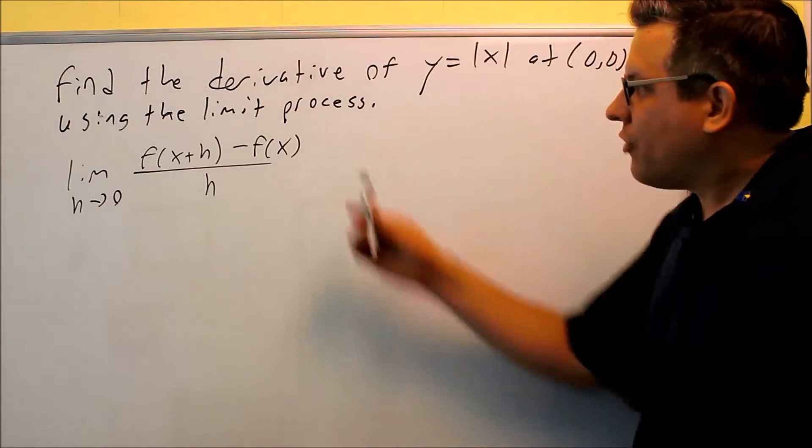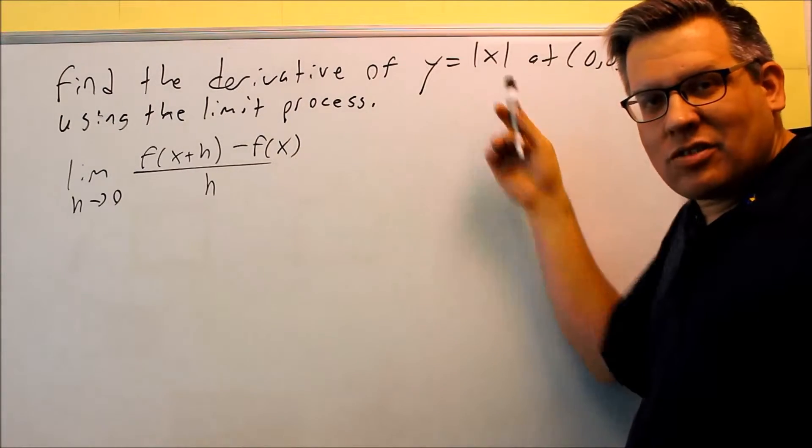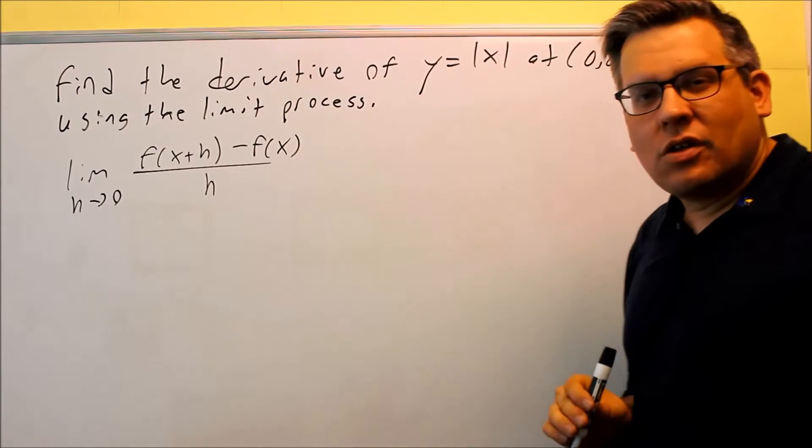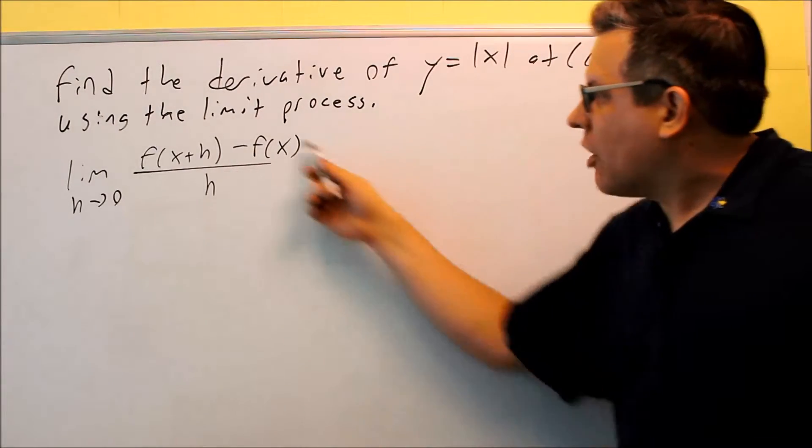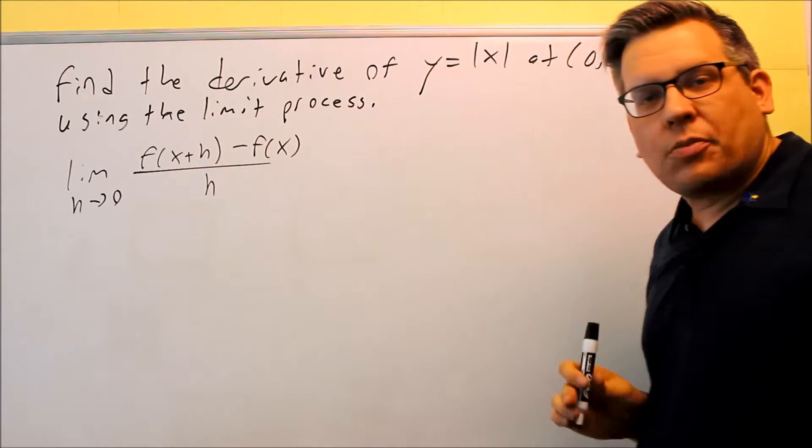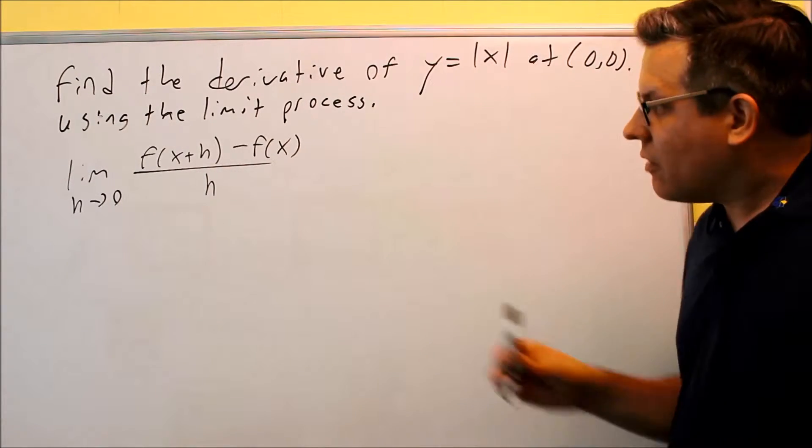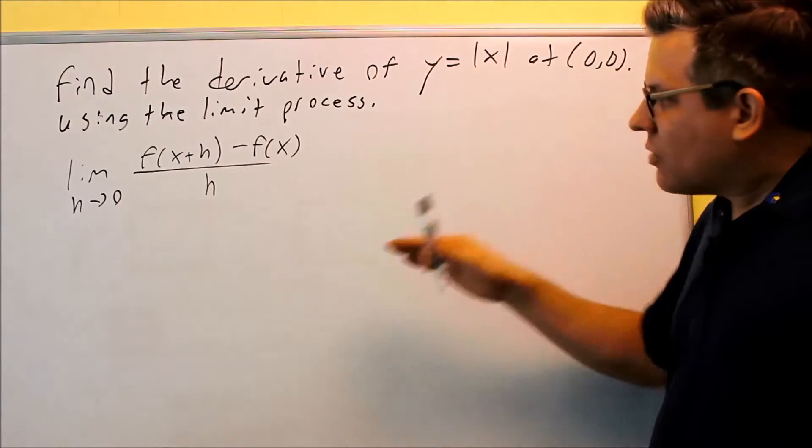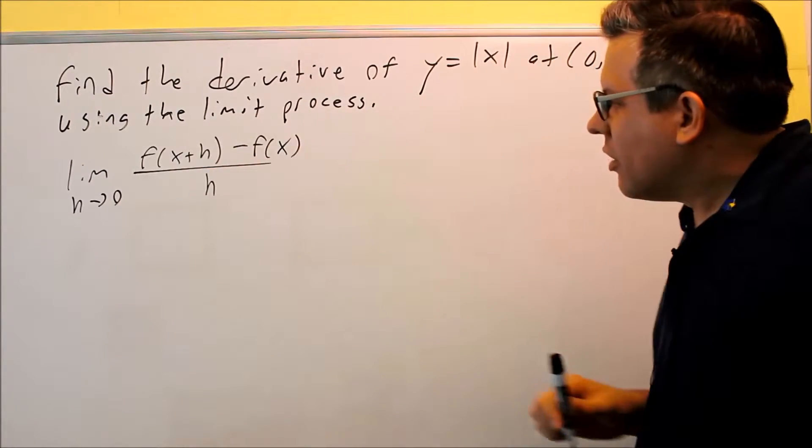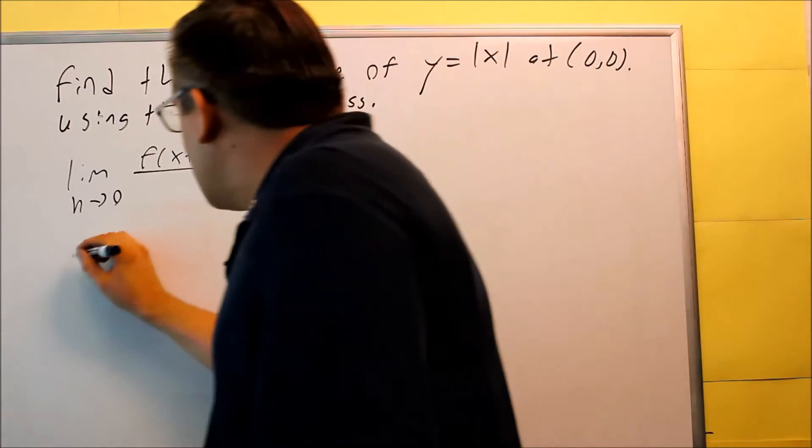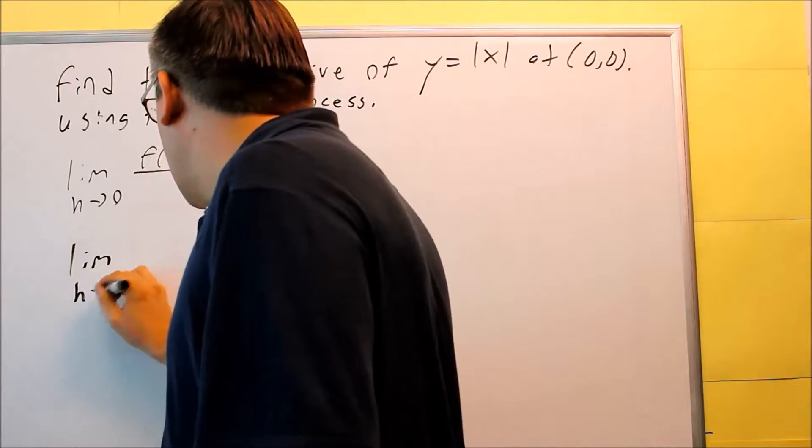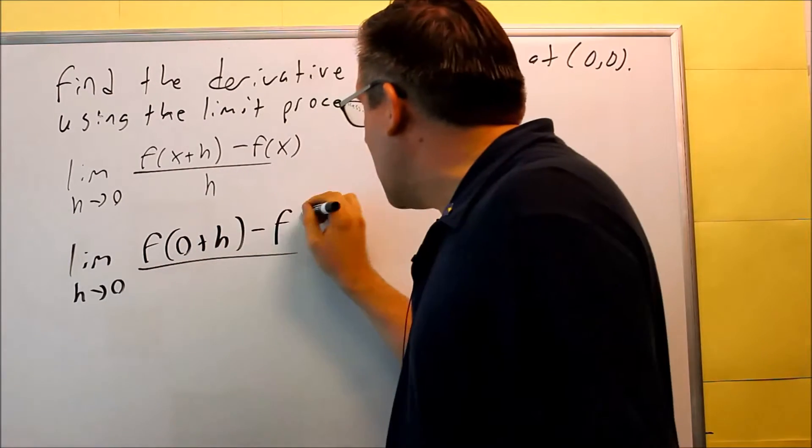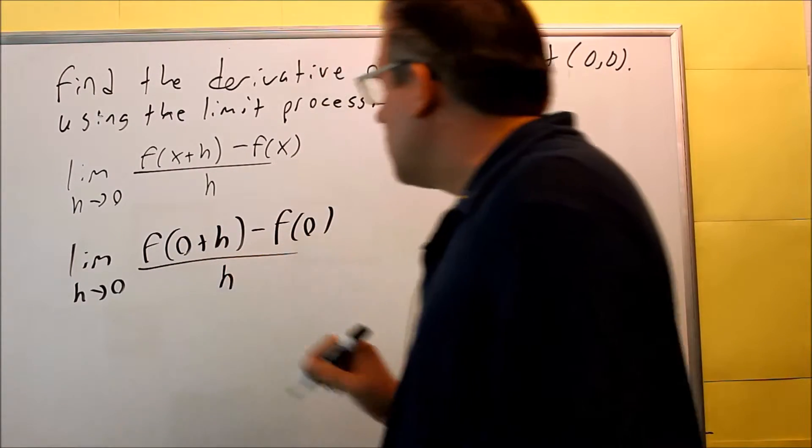Okay, for this problem, we want to find the derivative of absolute value of x at (0,0) using the limit process. Now, it might have been a while since you've seen the limit process, so I've put the formula up here just to remind us of how to do that. The x value here is going to be a 0, so I'm going to start with this formula. I'll plug in a 0 for the x's and that'll look like this. It'll be F of 0 plus h minus F of 0 all over h.